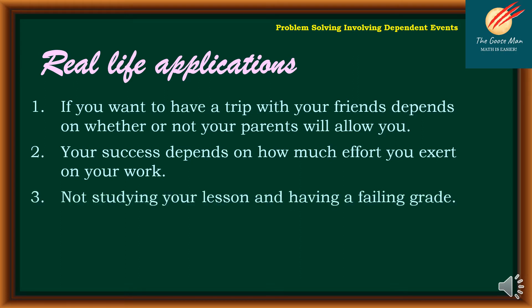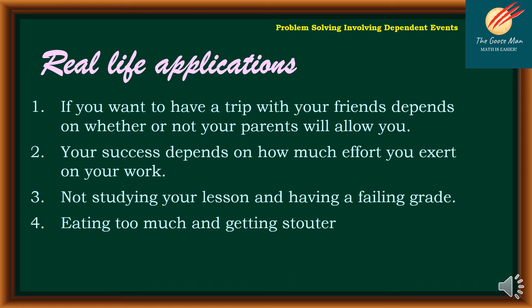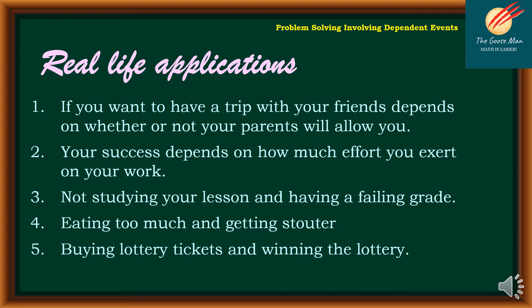Third, not studying your lesson and feeling great — unless you have a super memory, without studying you can still get a perfect score, but that's quite impossible. Fourth, eating too much and getting stouter — if you eat too much without exercising, you will get stouter or fatter. And fifth, buying lottery tickets and winning the lottery: even if you have the correct numbers, if you don't have the ticket, you cannot win unless you buy lottery tickets.